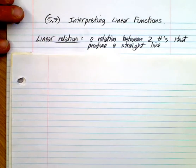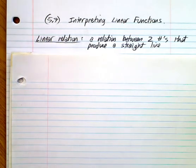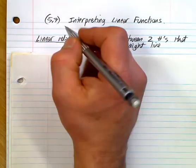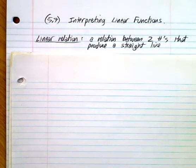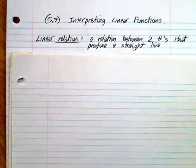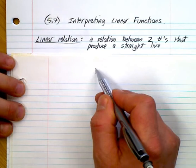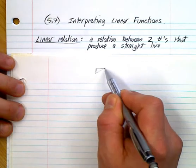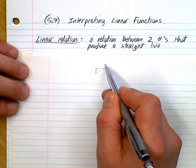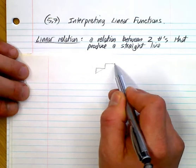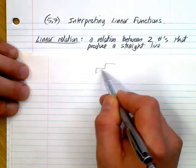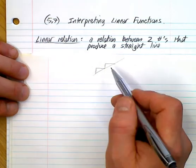First of all, we understand what a relation is — a relationship between two numbers. So a linear relation is a relation between two numbers that produces a straight line. That's what we've been looking at: how as one value goes up, so as your x value goes up, your y value goes up by the same steady amount. You end up with a line. That's the idea behind a linear relation.